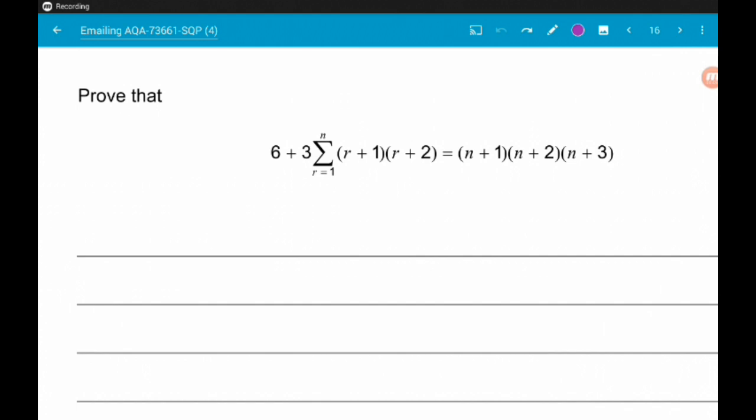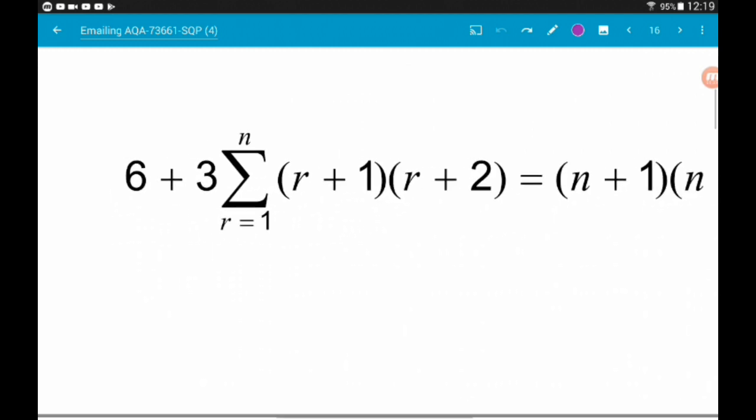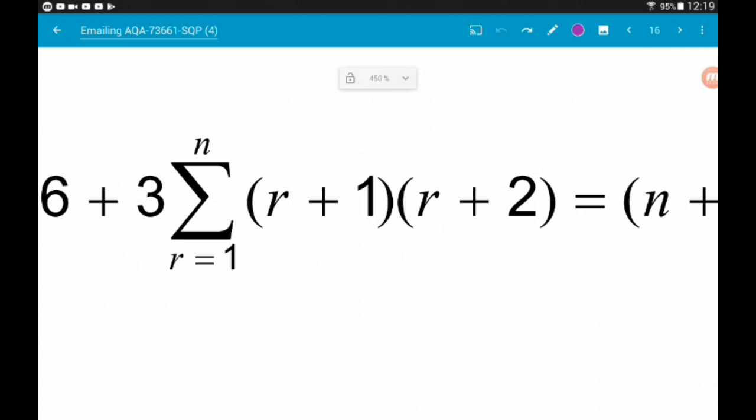Okay, question 10a is a bit of a monster. We want to prove that 6 add 3 lots of the sum from r equals 1 to n of r plus 1 times r plus 2 is equal to n plus 1 times n plus 2 times n plus 3. It's going to be a nice big test of our algebra skills. First of all, we are only going to worry about what is inside of the powerful brackets. We're not worrying about the 6 at the start nor about the fact the sum is being multiplied by 3. We're just going to play with the sum itself.